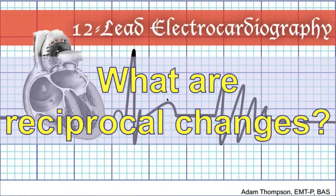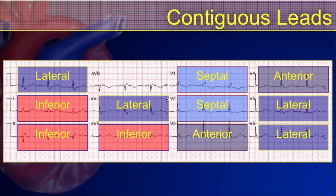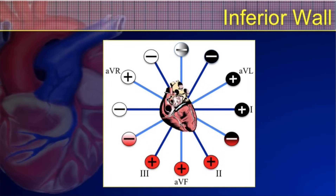Hello and welcome. I'm Adam Thompson and in this discussion on 12-lead electrocardiography we're going to talk about reciprocal changes. First, let's revisit contiguous leads, because to understand reciprocal changes you have to understand that concept. Contiguous leads are those that look at the same area of the heart — they're like camera angles. Leads 2, 3, and AVF are inferior leads; 1 and AVL along with V5 and V6 are lateral leads; V1 and V2 are septal leads; and V3 and V4 are anterior leads. Lead placement around the heart indicates which section those leads are viewing, helping us identify infarction patterns and recognize a STEMI.